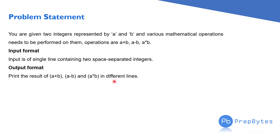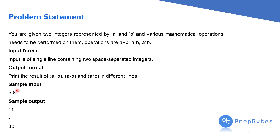Each and every word is important here. For example, the sample input is five and six — two space separated integers. The sample output for them is: five plus six is eleven, five minus six is minus one, and five into six is thirty.